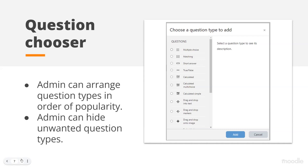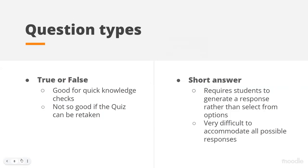What we have here are our top four, generally accepted as the most popular question types: multiple choice, matching, short answer, and true/false. So I thought we would begin by exploring these a little bit, looking at their pros and cons, and asking what you think of them. Shall we do them in reverse order of popularity? So let's take a look at true or false first of all.